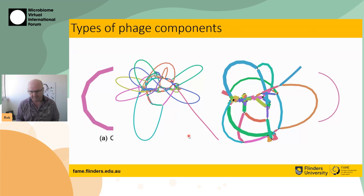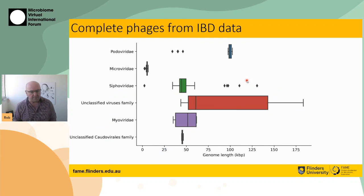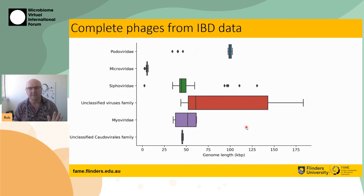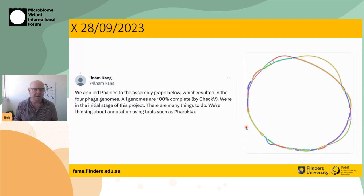Here's an example of a case where we were able to identify a phage — from that same IBD dataset I showed you with Hecatomb. We could deconvolute the phage, run it through PHROG, and get a complete phage genome annotation. When we look at our IBD phages we get lots of complete genomes, we can separate them into different families, and we get complete genomes of different genome sizes. We see these phage bubbles not only in fecal samples from IBD patients but also in samples from sharks' teeth, shark skin, shark feces, and everywhere else we look.